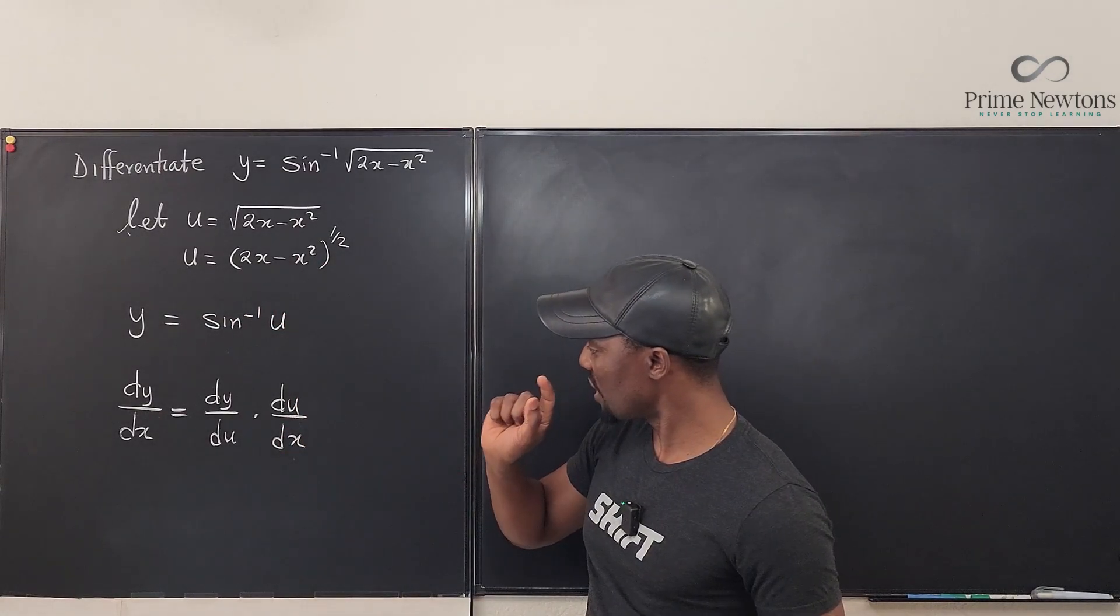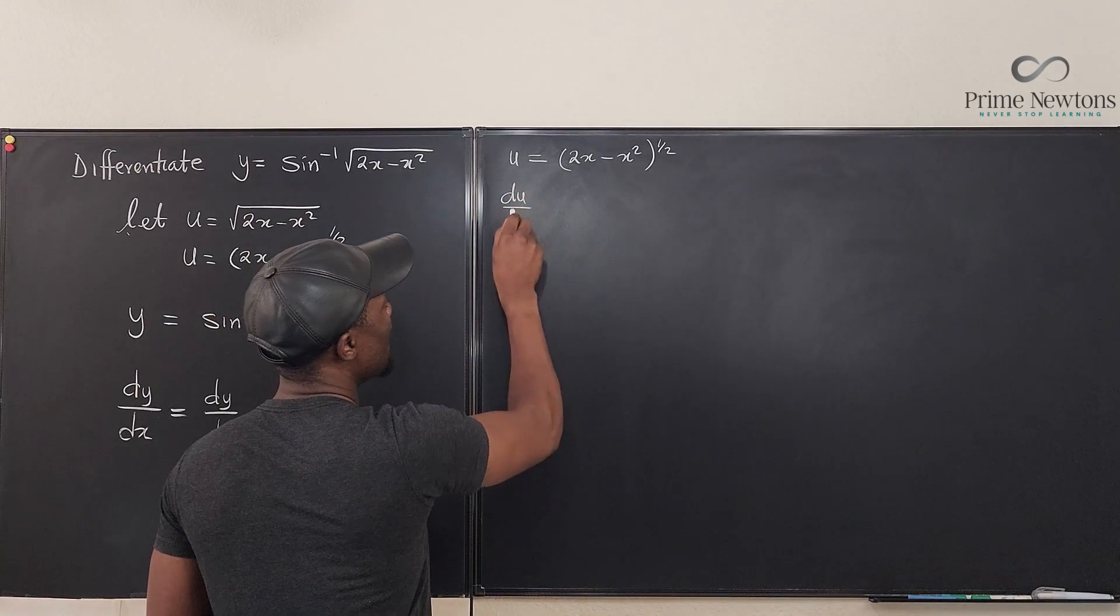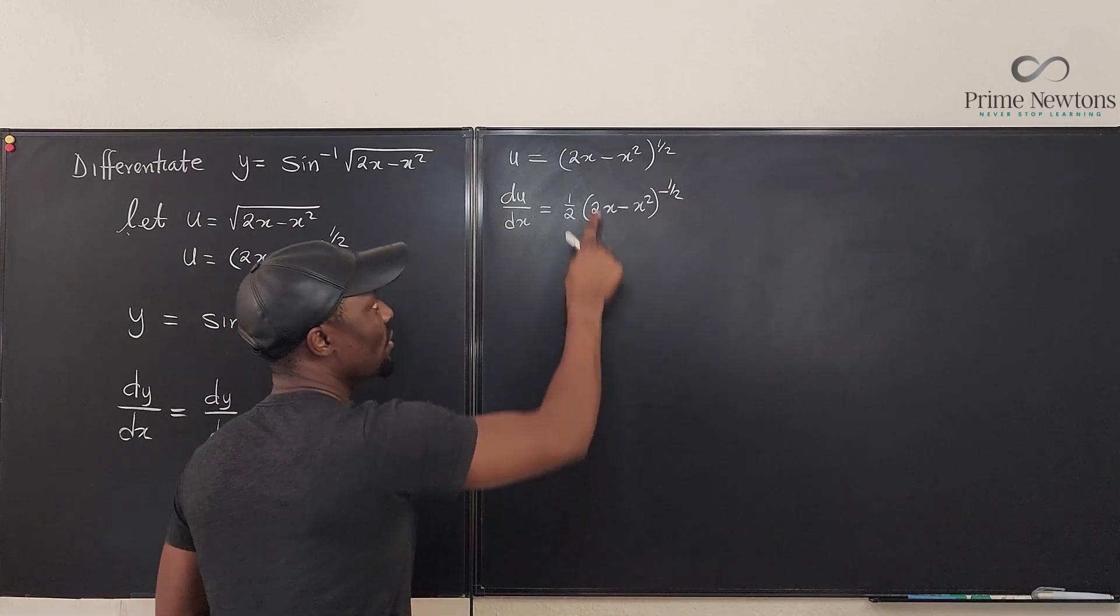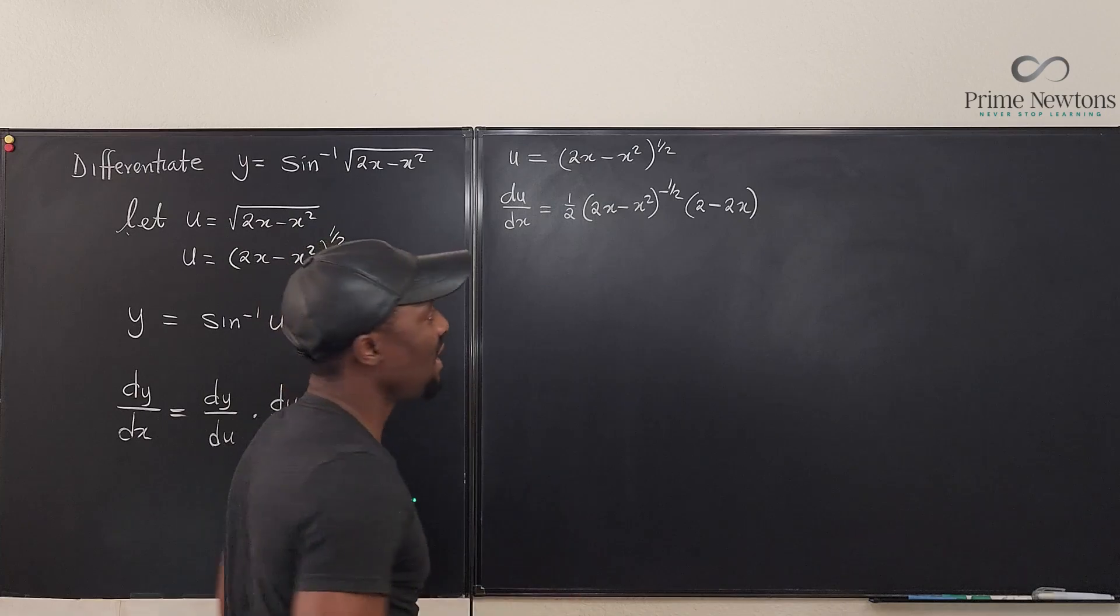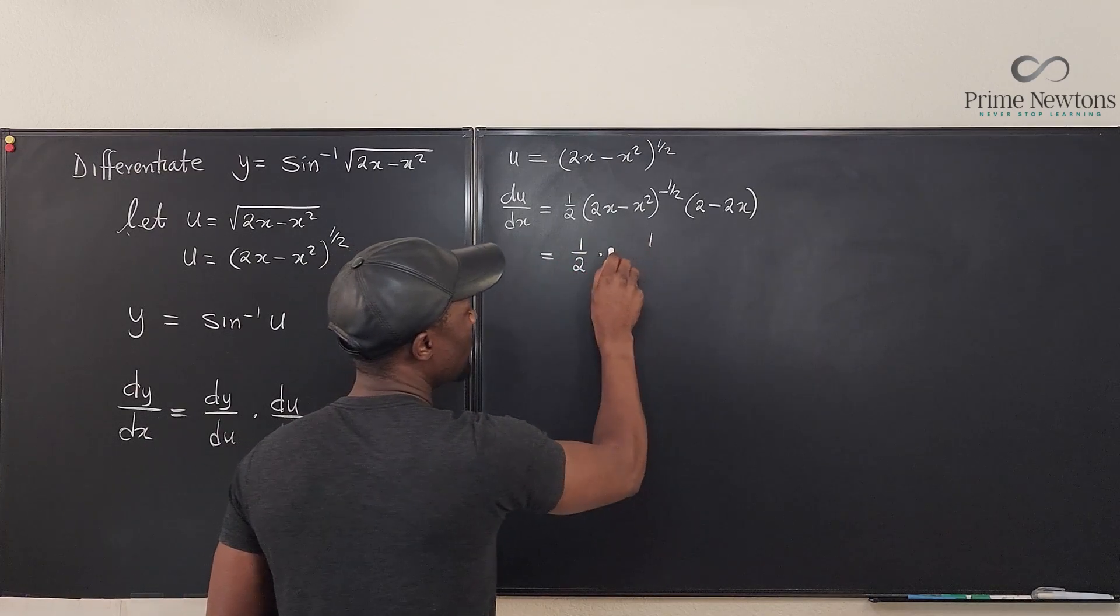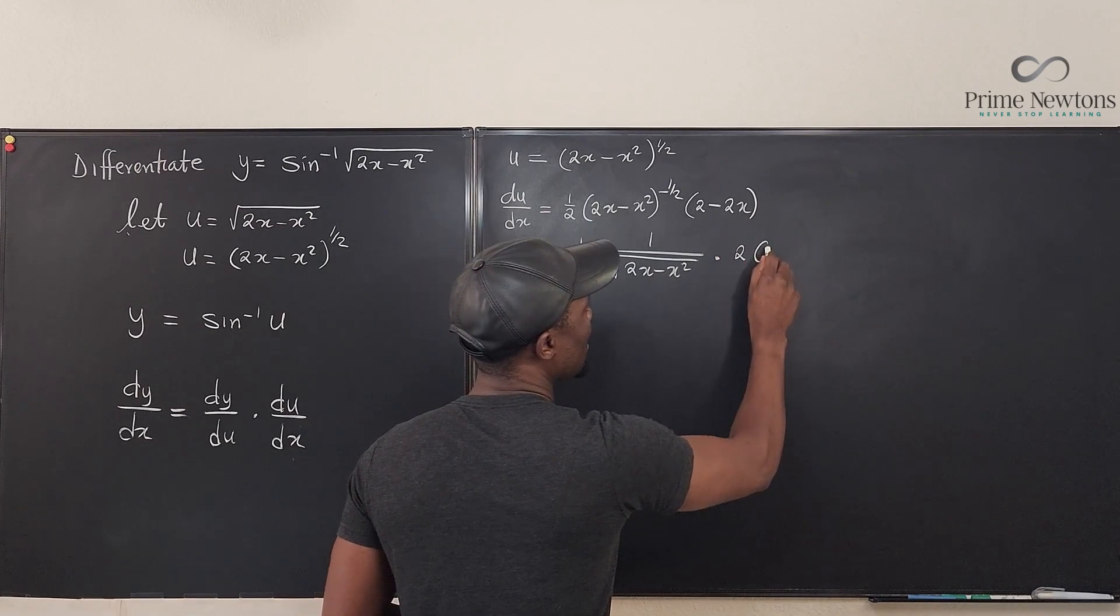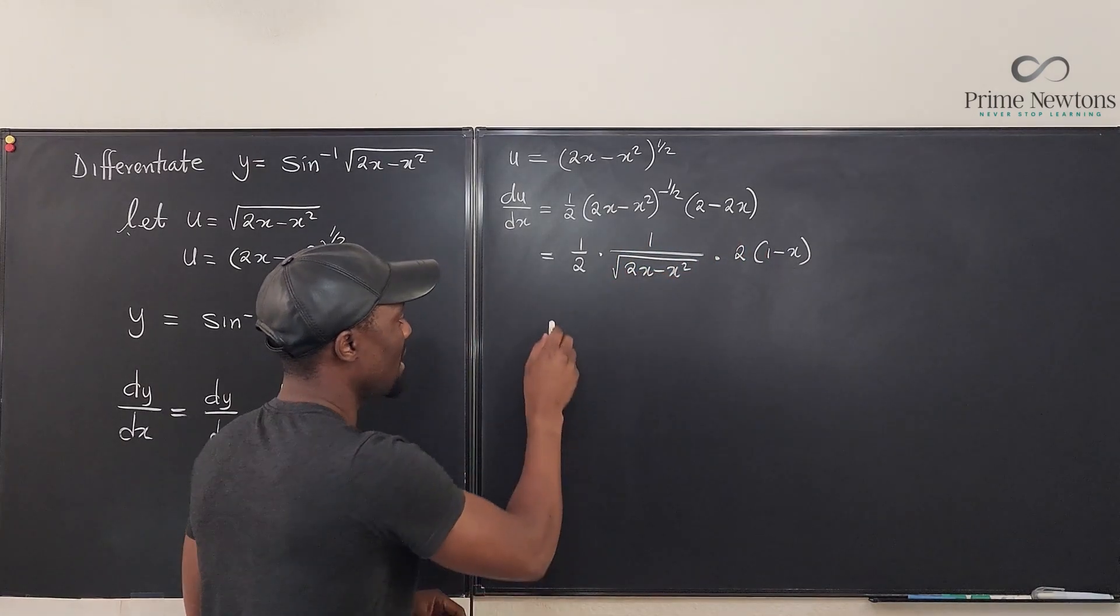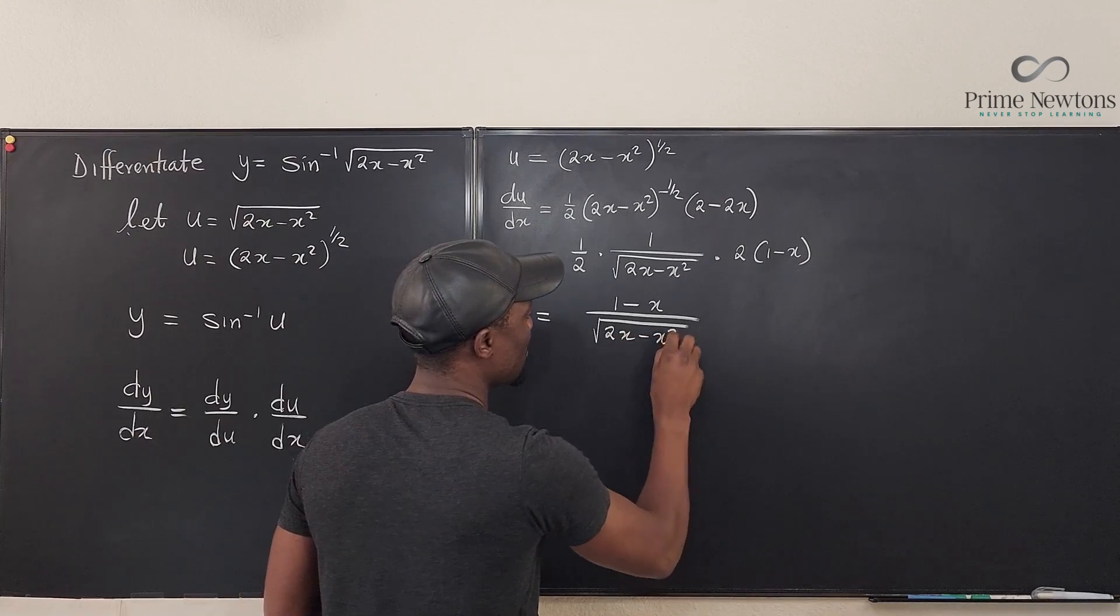So let's start with differentiating du/dx. So here we've got u equals 2x minus x squared to the 1 half. If we apply the chain rule here, we know that du/dx is equal to 1 half of 2x minus x squared to the negative 1 half, multiplied by the derivative of the inside, which is going to be 2 minus 2x. If we try to simplify this, with this negative 1 half exponent is the same thing as saying 1 half times 1 over the square root of 2x minus x squared, multiplied by 2 times 1 minus x. If we factor out the 2. And you see this 2 cancels this 2. And this 1 minus x can sit on top of this and have it to be 1 minus x over the square root of 2x minus x squared. We are done with du/dx.